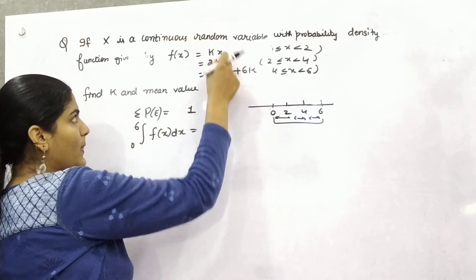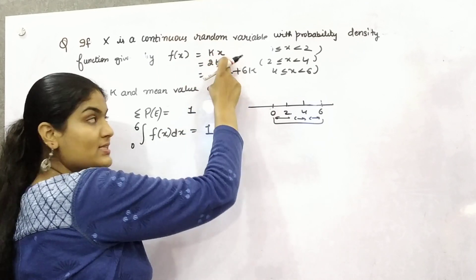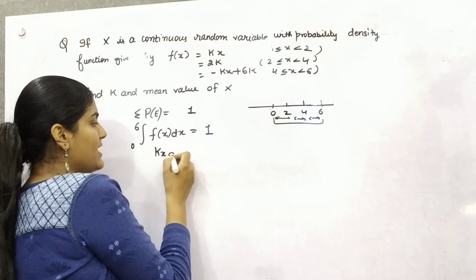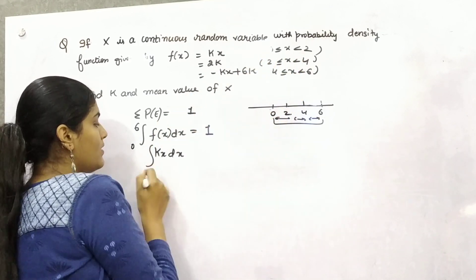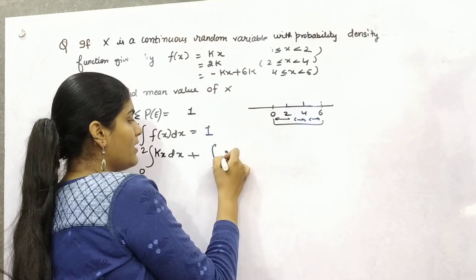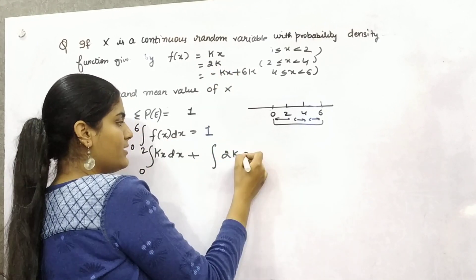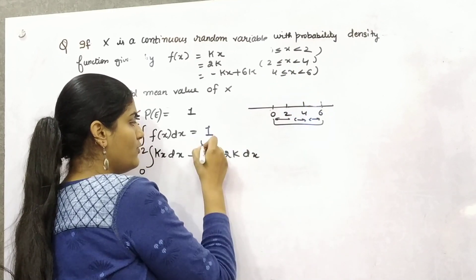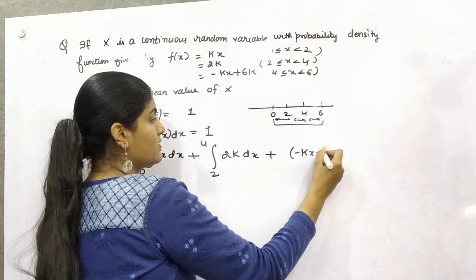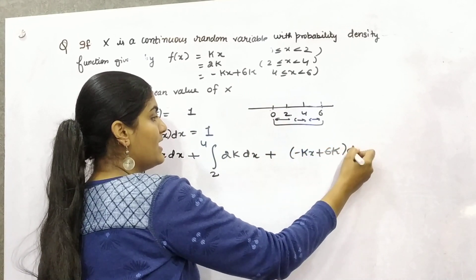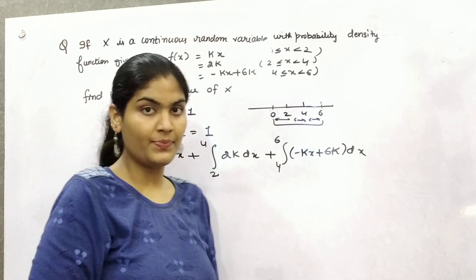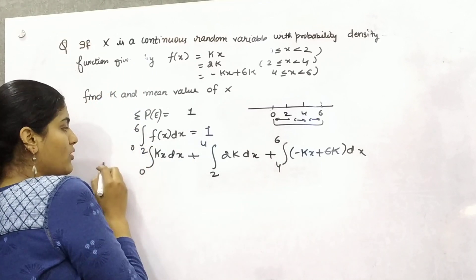Now expand it with respect to these functions. This is kx dx for limit 0 to 2, plus 2k dx for limit 2 to 4, and then minus kx plus 6k dx, limit 4 to 6.